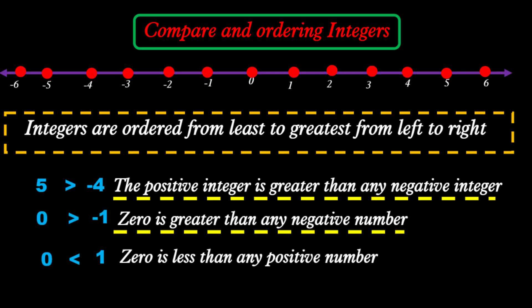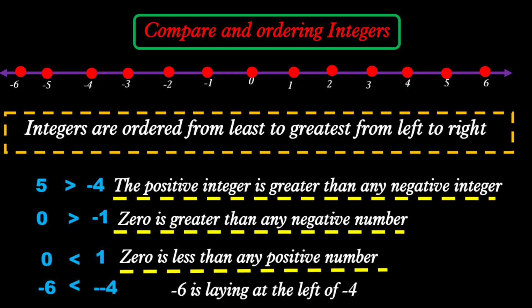We can also say that 0 is less than any positive integer. Now, negative 6 is less than negative 4. Why? Because negative 6 lies to the left of negative 4 on the number line. So negative 6 is less than negative 4.